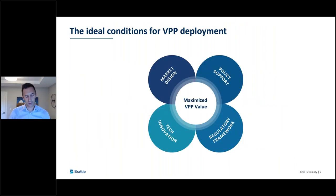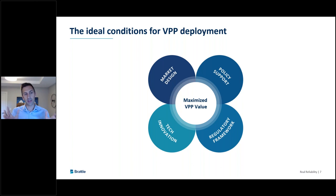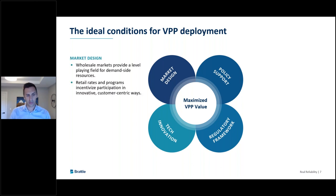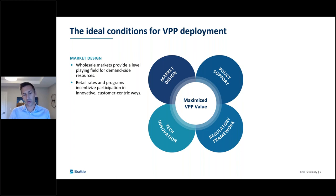Looking at what needs to happen for this potential to be realized — we've described the ideal conditions in four distinct areas. First, market design: we need wholesale markets that provide a level playing field for demand-side resources, and retail rates and programs that incentivize participation in VPPs in innovative, customer-centric ways. The idea of subscription pricing and subscription-based fees to promote VPP adoption is an interesting and underappreciated area.